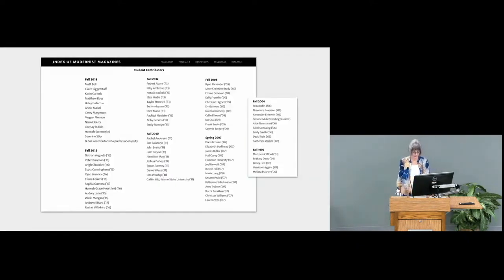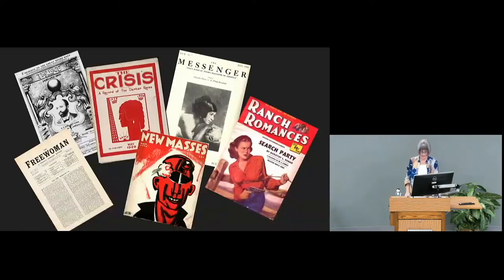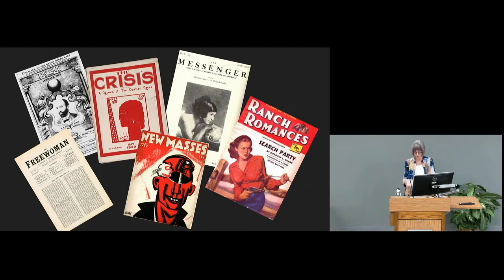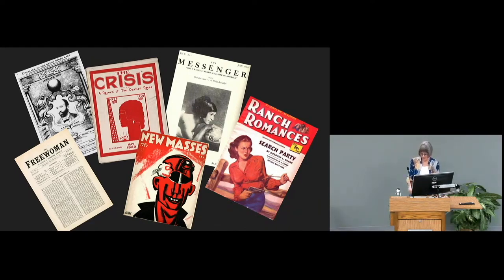Since 1999, generations of Davidson College students have contributed to the database as part of a collaborative research seminar I teach on modernism and magazines. Each student works with a librarian to identify a magazine to research and add to the collection. I challenge students to go beyond celebrated avant-garde little magazines like Blast, The Egoist, and The Little Review, and recover information about more neglected periodicals like The Anvil, Challenge, Colored American Magazine, The Free Woman, Messenger, and Opportunity. There's still an imbalance of attention toward these publications.